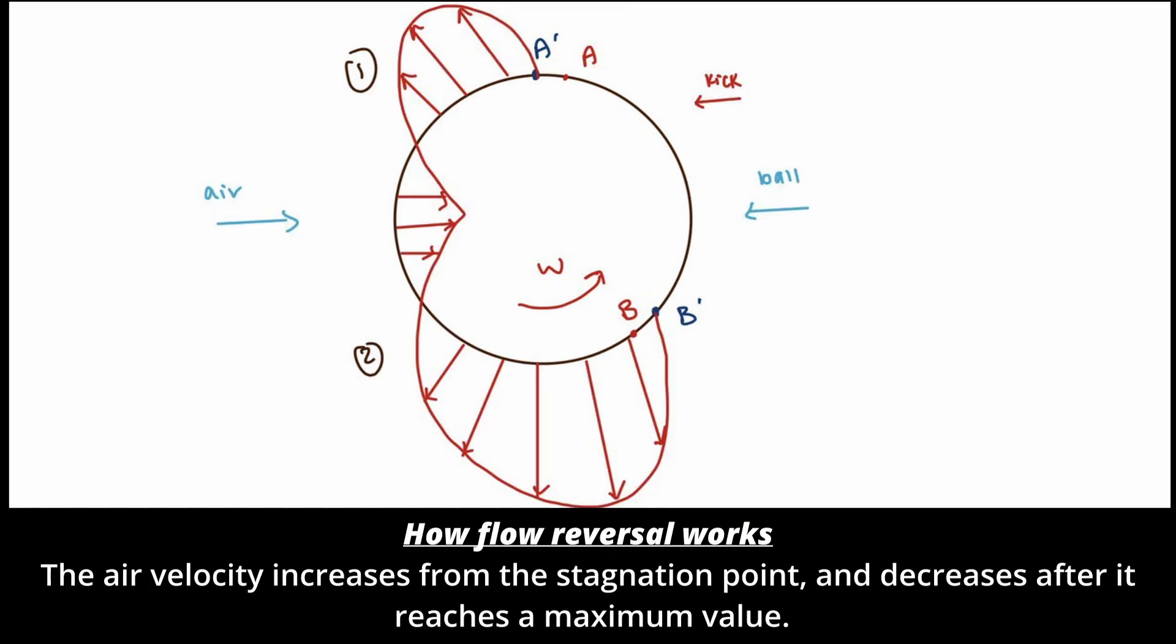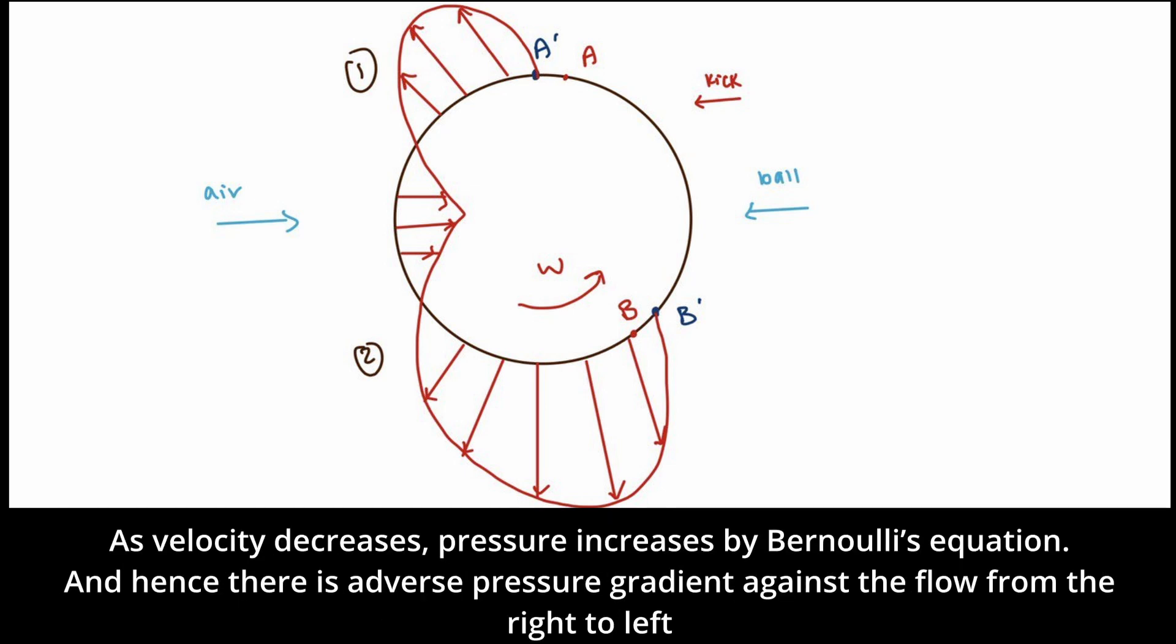How flow reversal works? The air velocity increases from the stagnation point and decreases after it reaches a maximum value. As velocity decreases, pressure increases by Bernoulli's equation. And hence, there is adverse pressure gradient against the flow from the right to left.